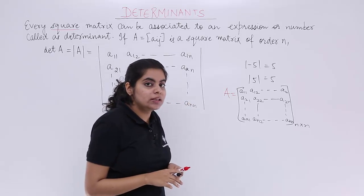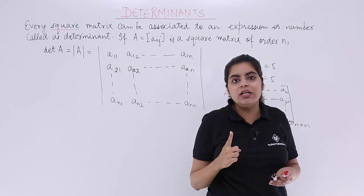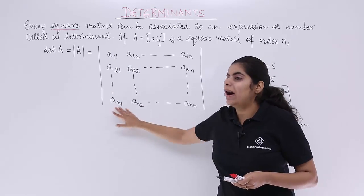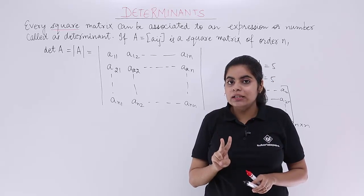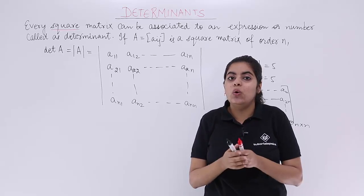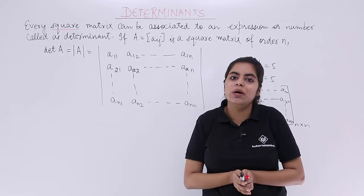Two important things to note in this case. The first thing: determinant, although written in the parallel lines form, is not equal to modulus. The second important thing: determinants are possible only and only when we have square matrices.